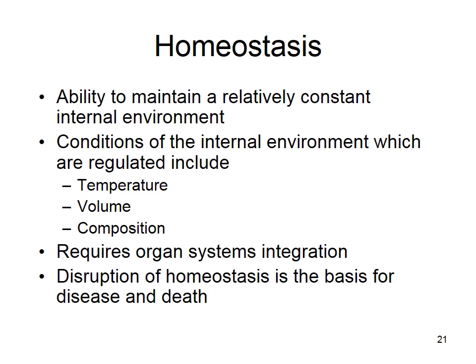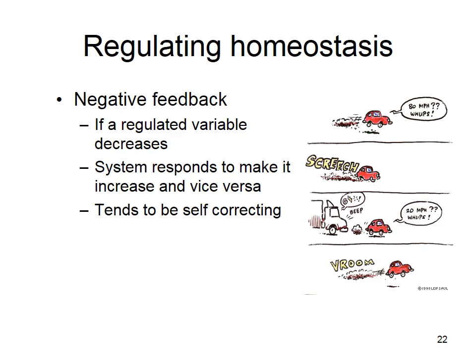In general, we regulate homeostasis by a process called negative feedback — and 'negative' doesn't mean bad. If a regulated variable changes, we set into motion mechanisms that will bring it back to a set point. We have a set point; if a variable goes above or below it, we set into motion mechanisms to bring it back.